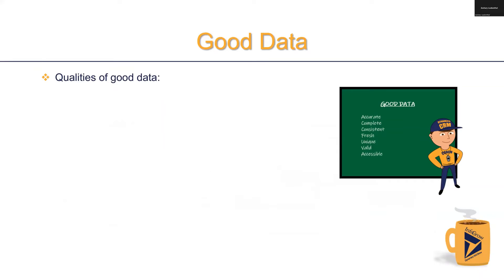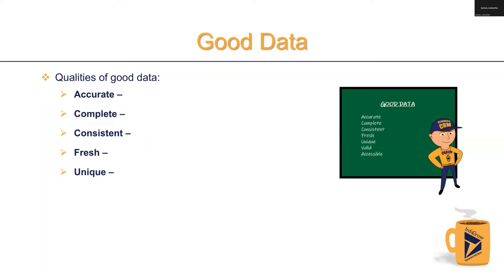Now that we have gone over instances of bad data, let's talk about good data. Qualities of good data include data that is accurate, complete, consistent, fresh, unique, valid, and most of all, accessible.